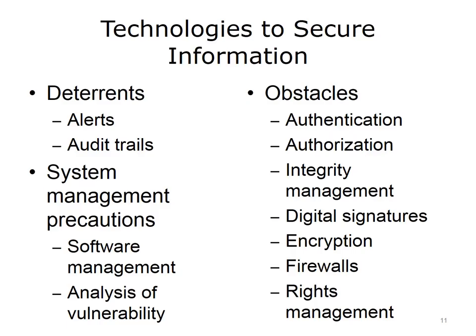A variety of technologies can be used to secure information. There are deterrents which do not exclude people from breaching security but give them pause for doing so, such as putting up alerts when an employee's medical record is about to be accessed. Another deterrent is the audit trail. System management precautions also can be taken. A number of software systems do not protect information as well as they should, and an analysis of vulnerability can reveal such risks. Here are some obstacles that can prevent individuals from getting to private information. Authentication: the user must provide credentials, usually a password, to access a system or file. Authorization: the user is given or denied permission to specifically access, read, write, edit, create, move, and/or delete files.